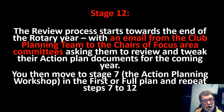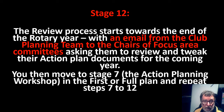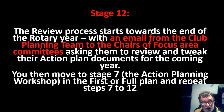The final stage in the club planning process is the review process, which starts towards the end of the Rotary year, around May. The planning team sends an email to chairs of focus area committees asking them to review and tweak their action plan documents for the coming year. For the review stage, we simply move to stage seven in the full plan document and repeat stages seven to eleven as a plan review each year, until a new full strategic and action plan is commissioned by the board — say three to five years later. So you effectively work from stages seven to twelve as the annual review.